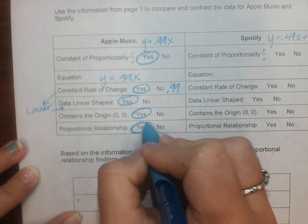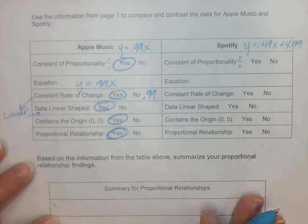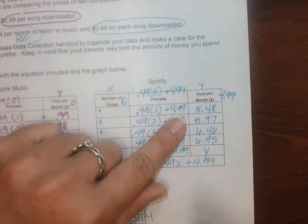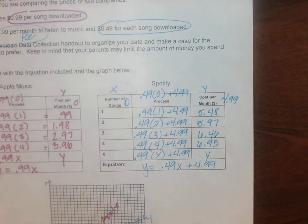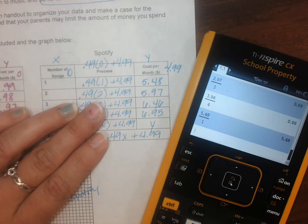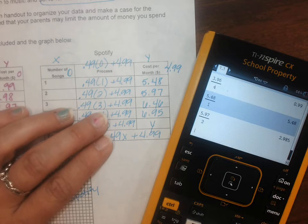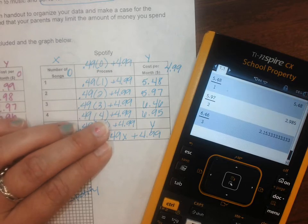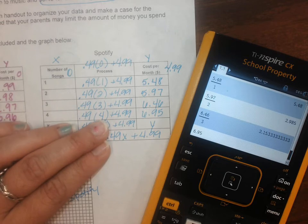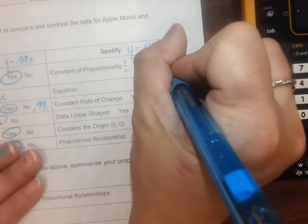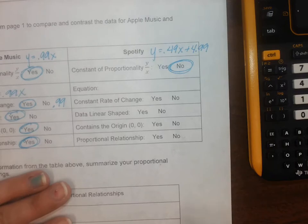Now Spotify. Y divided by x, so we're going to come over here and say $5.48 divided by 1, well that's going to be $5.48. Then I'm going to say $5.97 divided by 2. Whoa. Then I'm going to say $6.46 divided by 3. Why do I keep getting different answers? Oh, because it's not proportional. There's not a constant of proportionality.